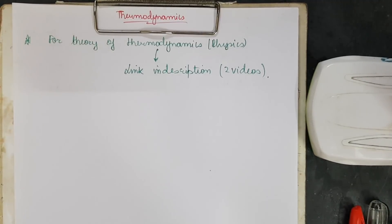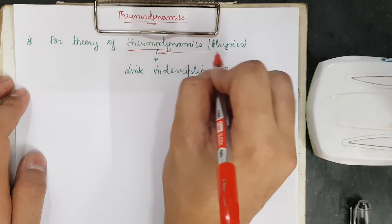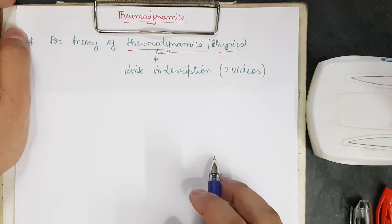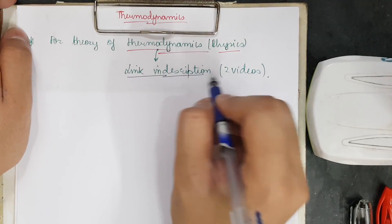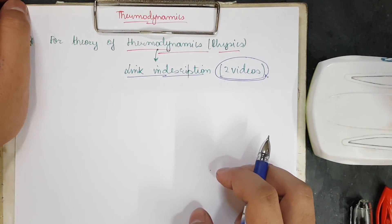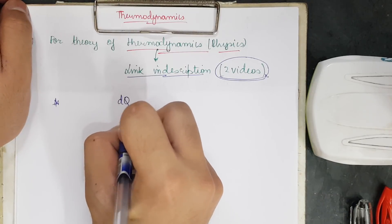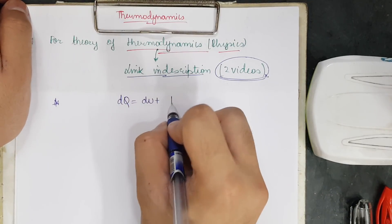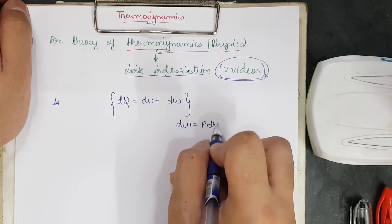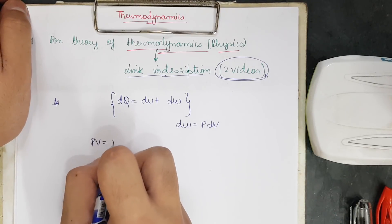This is the physics revision video for thermodynamics. In this video we shall be discussing thermodynamics in the subject of physics. If you want to read the theory, you can check out the link in the description — there are two videos for the theory. In this video I shall be focusing on questions. The only things you must know are: dQ = dU + dW for basic questions, dW = p·dV if a PV graph is given, and PV = nRT.